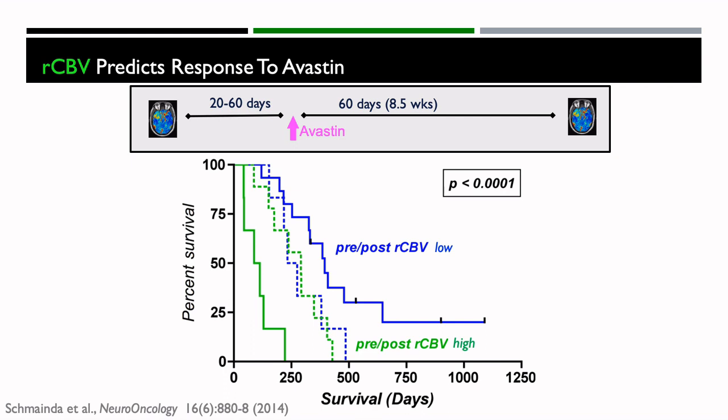We also do quantitative evaluation of RCBV in the context of predicting response to Avastin. We collected RCBV 20 to 60 days before starting bevacizumab and then again 60 days after, and looked at whether the change in RCBV is predictive of how well patients respond. If both your pre- and post-Avastin RCBV are low, you have the best outcomes in terms of overall survival. But if they're both high — suggesting the bevacizumab isn't having as much impact — it's the worst overall survival. This study shows that RCBV can help predict response to bevacizumab and may help physicians determine if it's really the best drug for a patient.